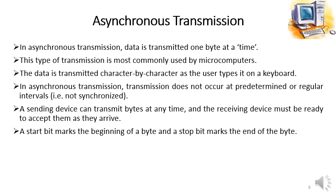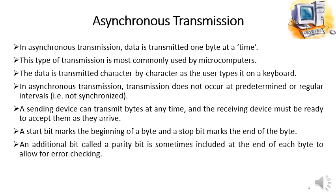A start bit marks the beginning of a byte and a stop bit marks the end of the byte. When the sender sends any byte, it first attaches a start bit at the beginning and a stop bit at the end, so that the receiver knows from the start bit that a new byte is arriving, and from the stop bit that one complete byte has been received. An additional parity bit is sometimes included at the end of each byte to allow for error checking.